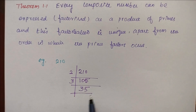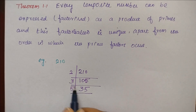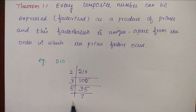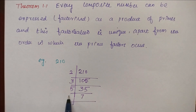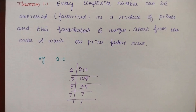So 35 cannot be divided by 3. The next prime number is 5. 5 times 7 is 35 — so it can be divided by 5. Now we have 7, and 7 times 1 is 7.